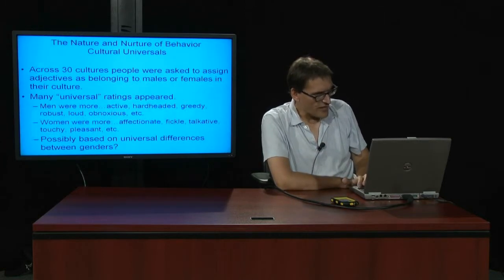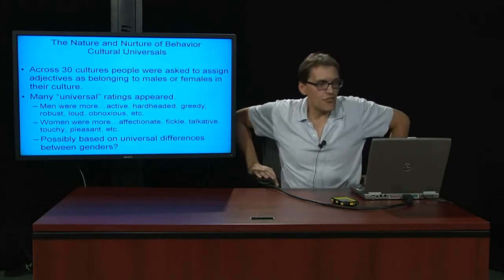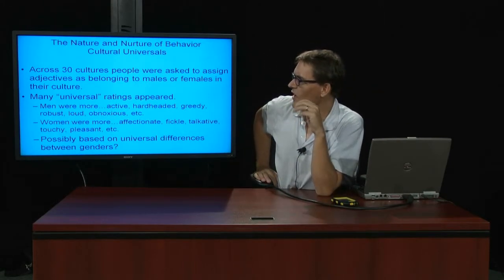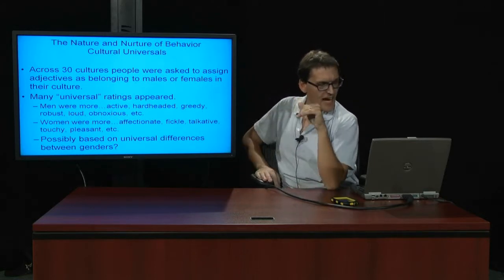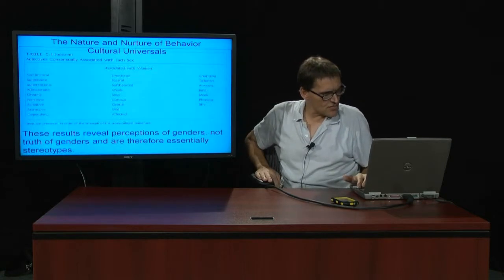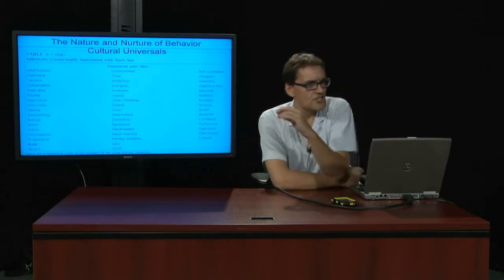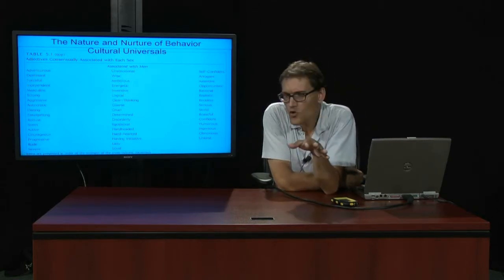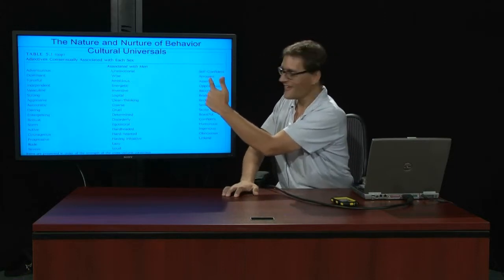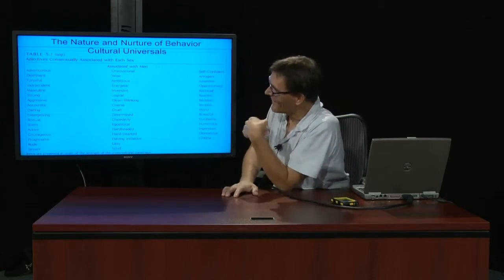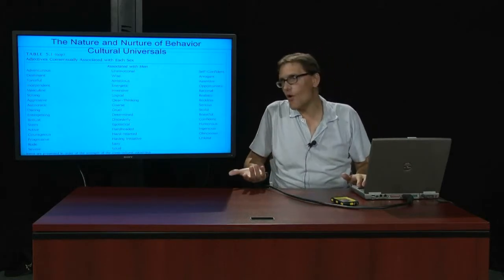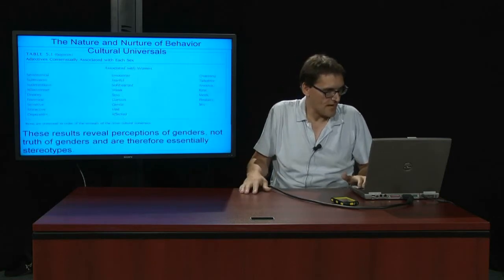They went to 30 different cultures, and they gave them different adjectives. And they said, tell me if this is a male adjective or a female adjective. You know, active, men. Hardheaded, men. Greedy, men. And how about women? Women are affectionate, fickle, talkative, touchy, pleasant. And so it turned out that all over the world, here's two slides in a row of different words that belong to each gender. And it turned out that all over the world, these are universal. These are not culturally based. This is biology. Why am I, as a male, more arrogant? Not my fault. Why am I more loud? That's me. So why am I that way? Because that's who I am. I'm just biologically programmed that way, and therefore it's going to influence my social behaviors. And the women have their own things.